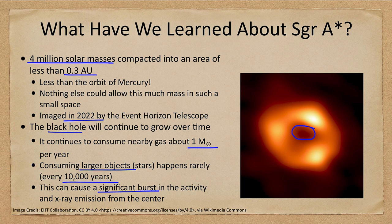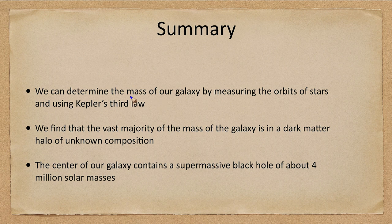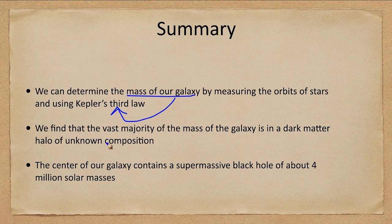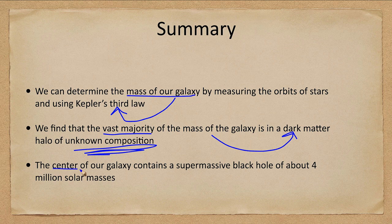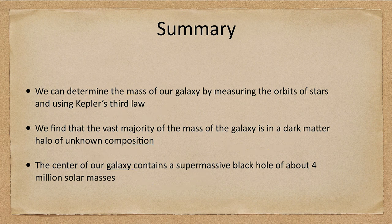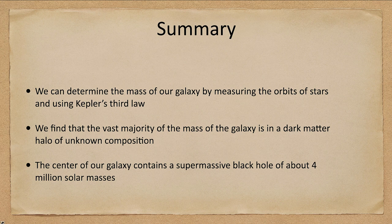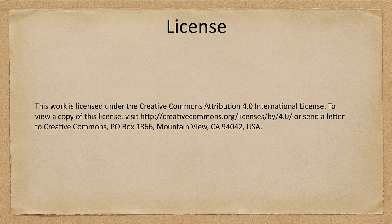Let's finish up this section with our summary. We can determine the mass of our galaxy by using the orbits of stars and remembering Kepler's third law. We find that the majority of the mass of the galaxy is in a dark matter halo of an unknown composition. And we found that the center of our galaxy contains a supermassive black hole about four million times the mass of our sun. That concludes this lecture on weighing the galaxy and the galactic center. Until then, have a great day everyone and I will see you in class.